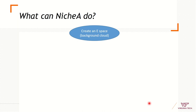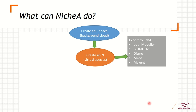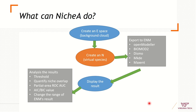Things you can do with NicheA include developing an environmental space called the background cloud, creating a species niche based on simulated or real occurrence data, projecting that information to develop models in other software like Maxent, viewing Maxent or other algorithm outputs in NicheA, and evaluating models using classic or novel evaluation tools.